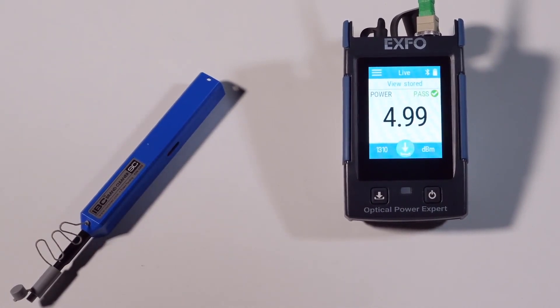To set a reference value, first you need to inspect and ensure all your patch cords are clean. You also have to make sure you use the proper adapter and test jumper and connect to a live source to your unit.